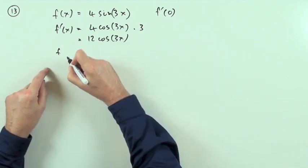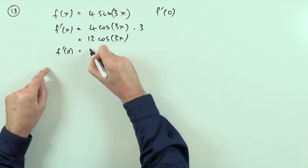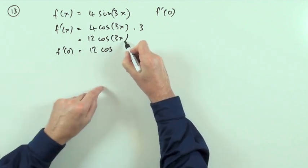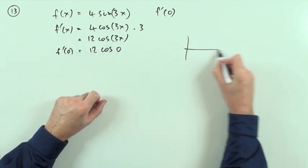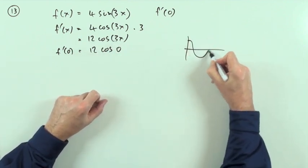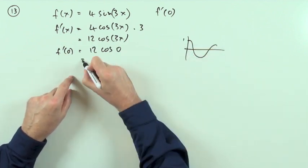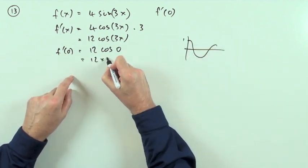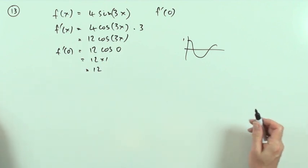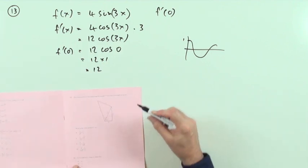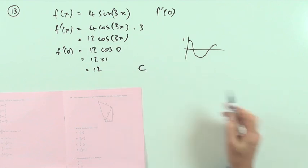To find the value of the derivative when x is zero, you have 12 cos(3×0), which is 12 cos(0). Remembering the cosine graph starts at the top — starts at one — so you've got 12 times 1, which is 12. The answer for number 13 is 12, which is C.